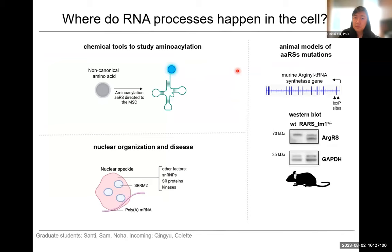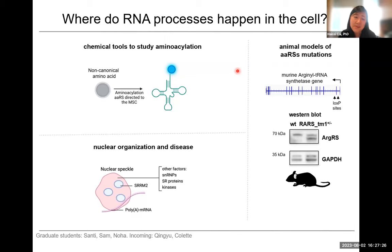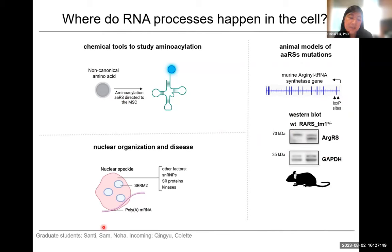In our own lab we are now looking more into the connection between tRNA synthetase localization and function. On one hand, we're building chemical tools to study where aminoacylation happens — motivated by studies on localized mRNA translation — and are curious about whether tRNAs are trafficked, whether tRNA synthetases are trafficked, and whether every ribosome has equal access to charged tRNAs. We're following up on animal models of tRNA synthetase mutations to figure out why specifically the white matter of the brain is susceptible to altered isoforms and ratios of ArgRS. We also continue looking into nuclear organization, SRRM2, and disease-causing mutations in SRRM2.